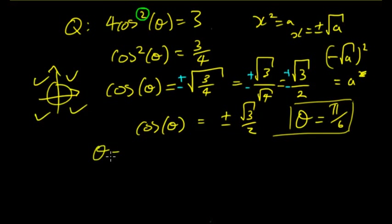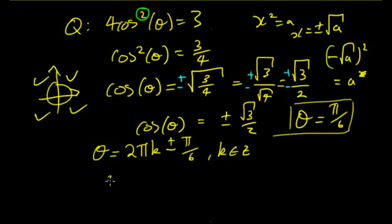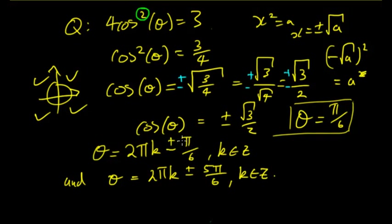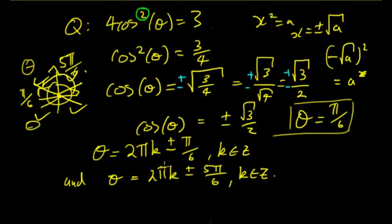So θ is going to equal — imagine if it was positive — we'd have 2πk ± π/6 where k is an integer, and we'd also have θ = 2πk ± 5π/6 where k is an integer. The base angle is π/6, and to account for the negative case the angle along there is 5π/6. If you write this as the answer it would probably be accepted, but it would be better to simplify it.